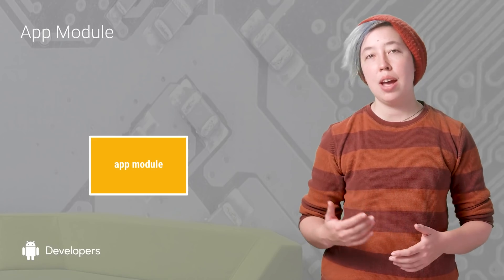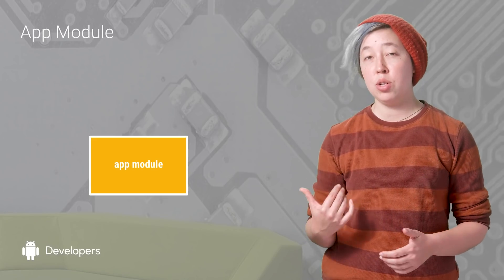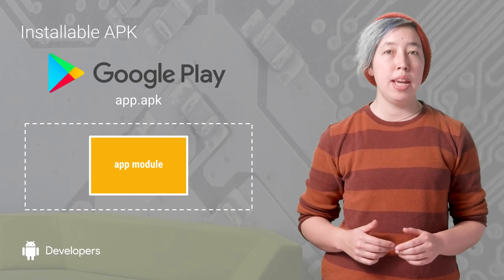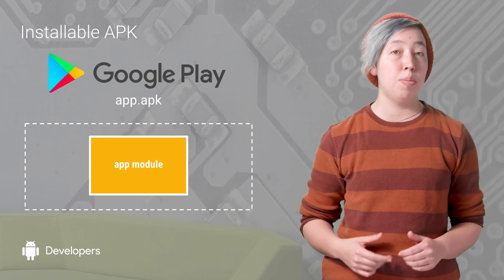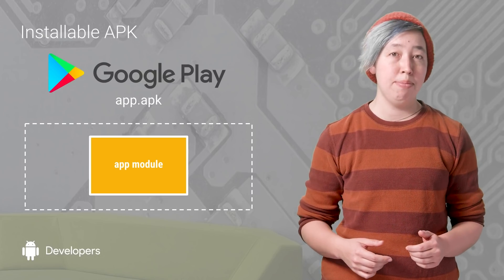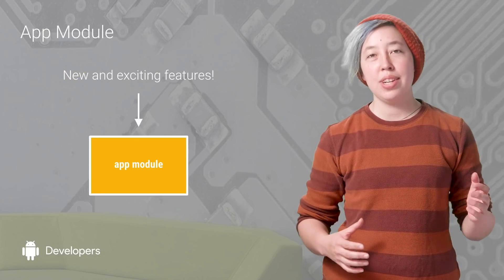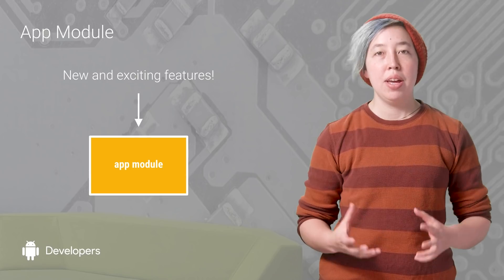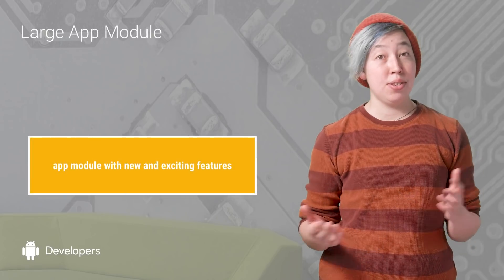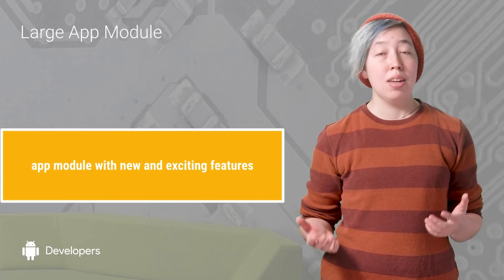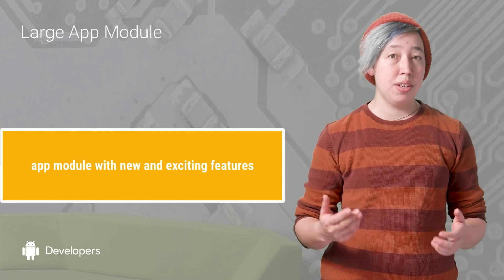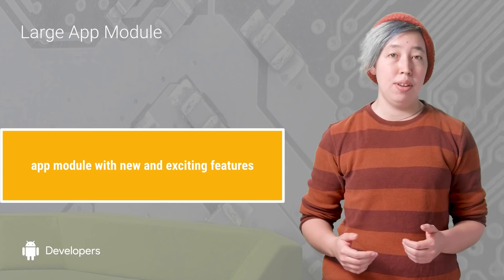Let's go ahead and take a look at how you'd actually go about structuring your app to be instant. You're most likely used to having a single app module like this. When you compile your app, it becomes an APK that you then upload to Google Play. As you add different features and assets to your app, that APK size is going to grow. Eventually, your single app module is going to take minutes to download.